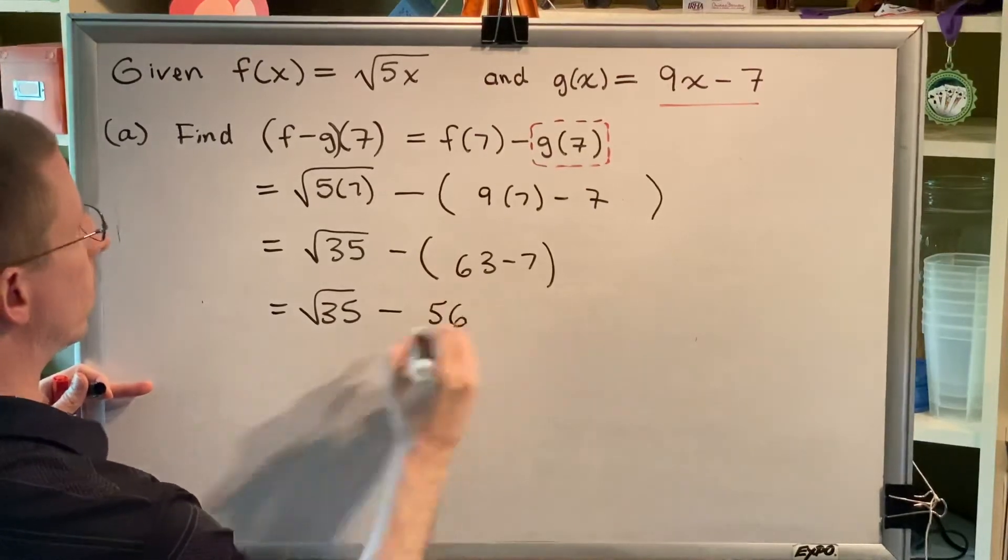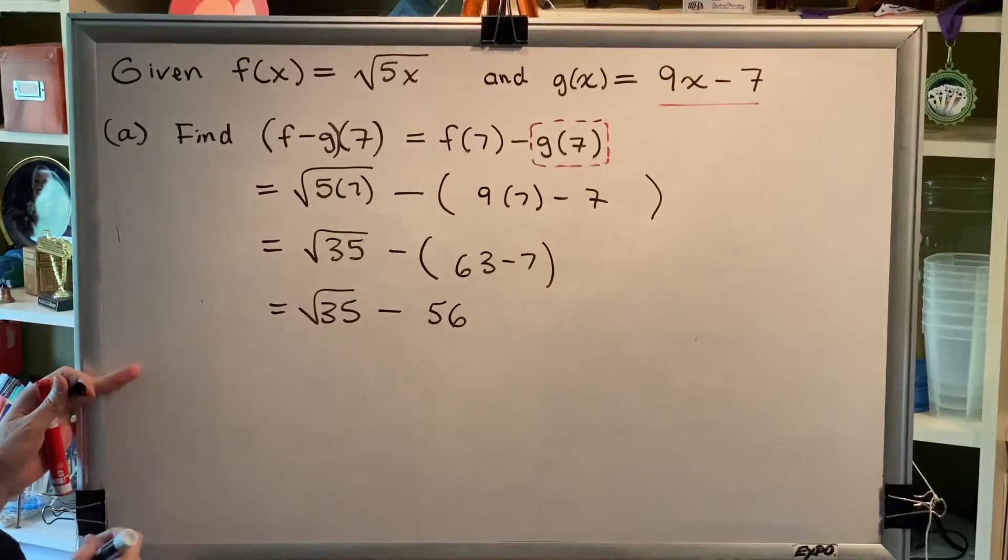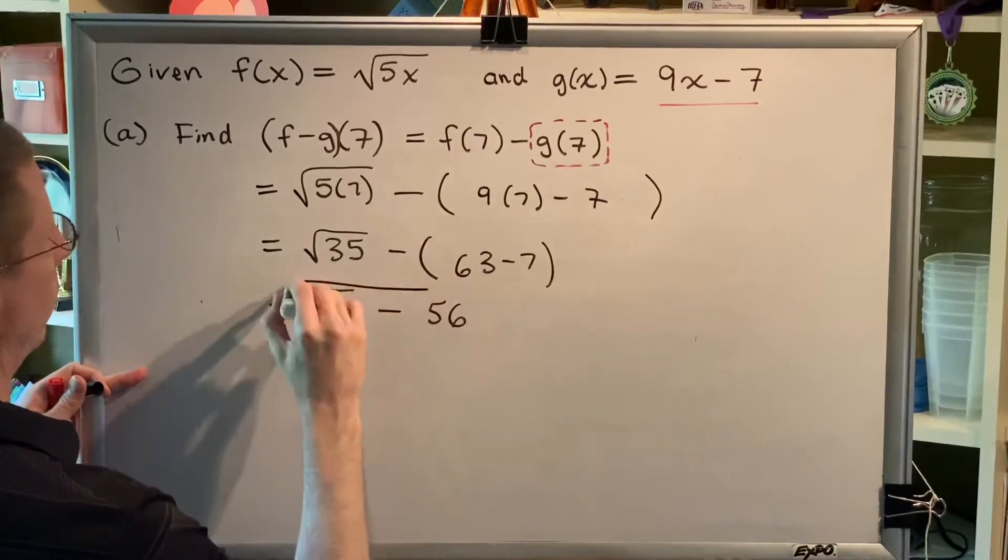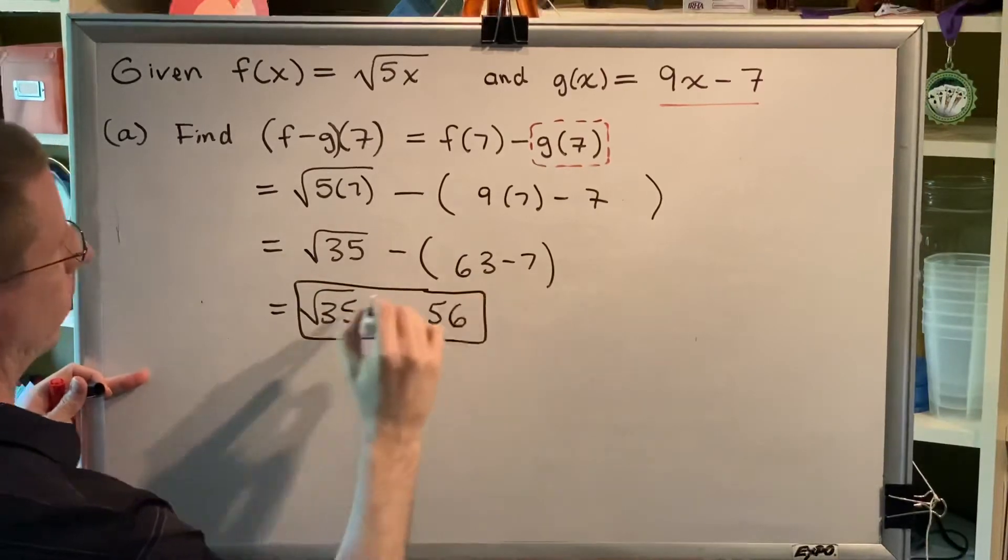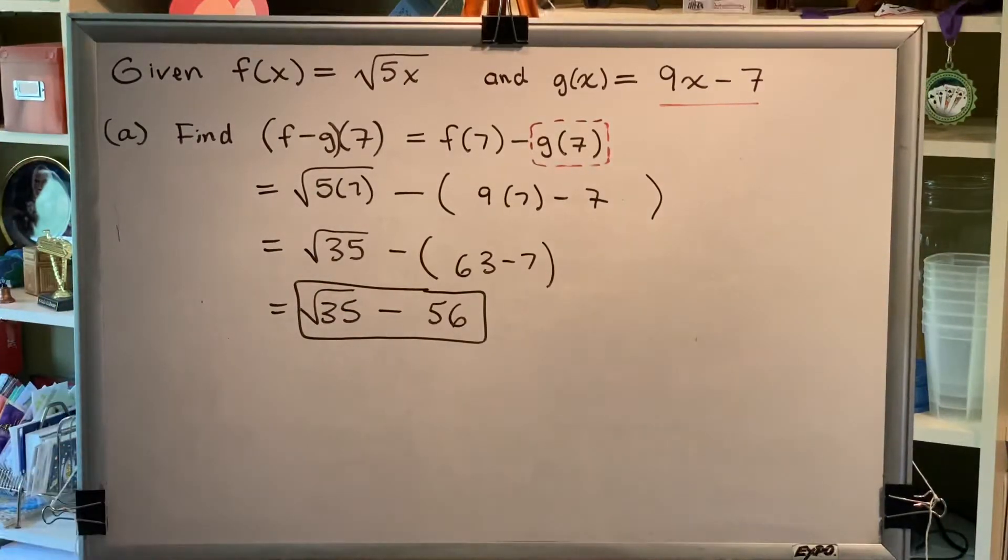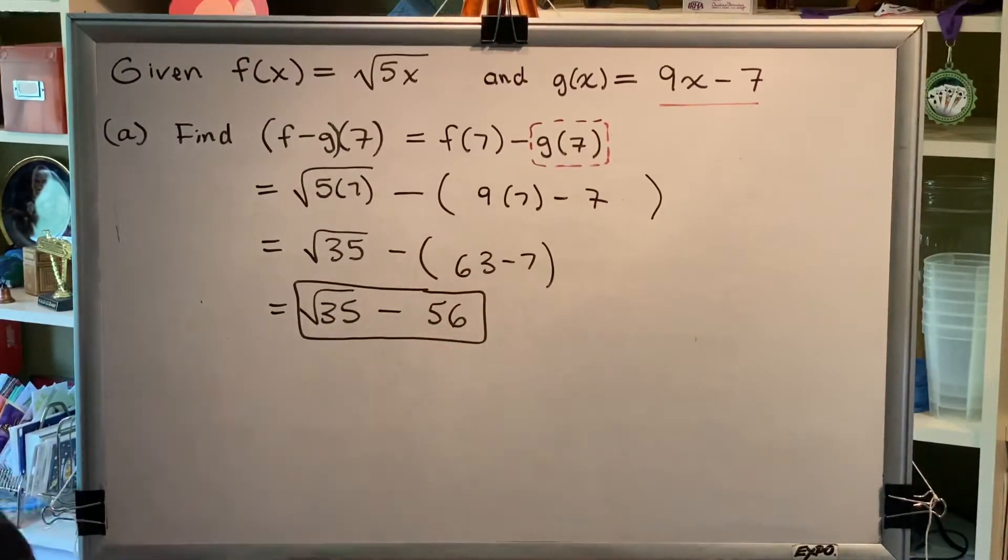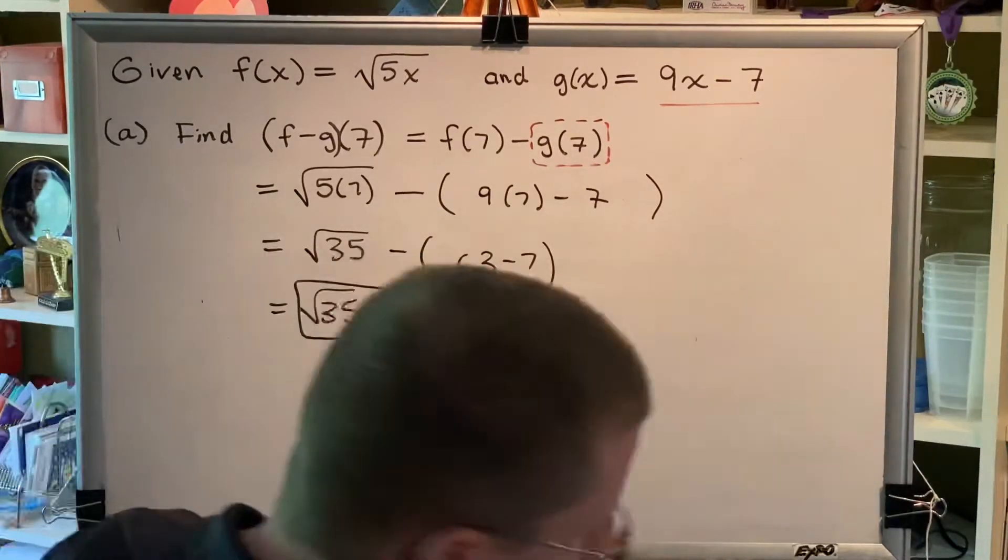And a radical and an integer cannot be combined, and so this is our final answer. Okay, notice that without these parentheses, we would have done minus 63 minus 7 and gotten minus 70 here, which is a wrong answer. Alright, that was part A. Let's move on to part B.